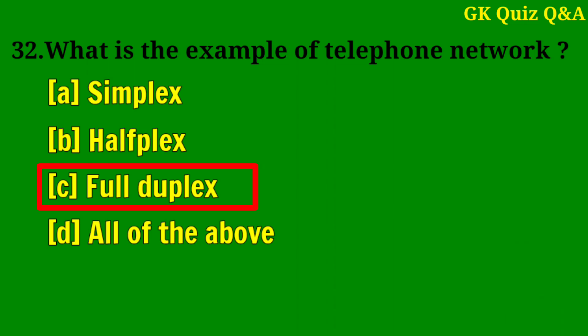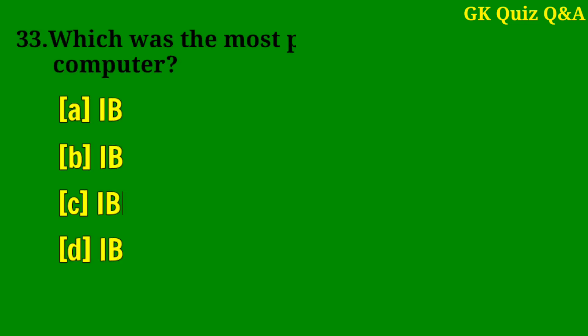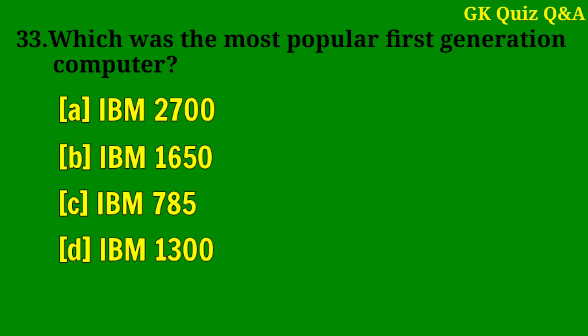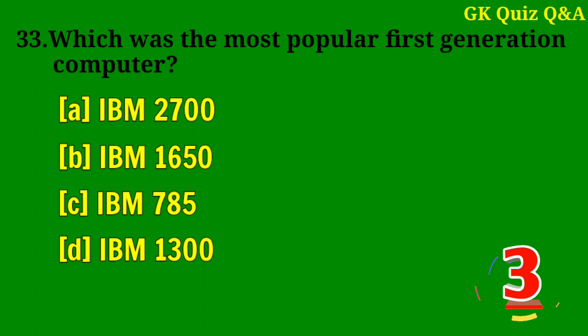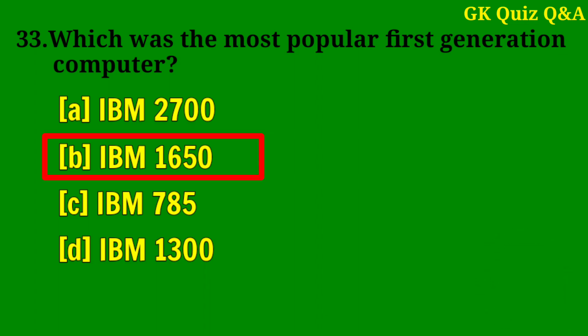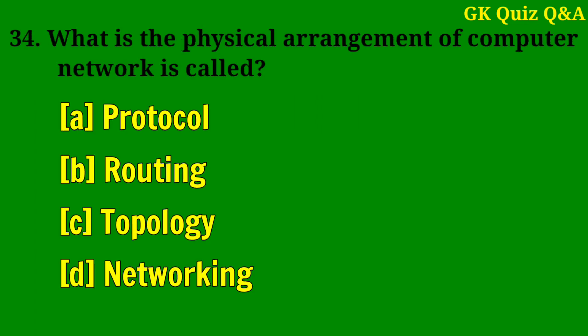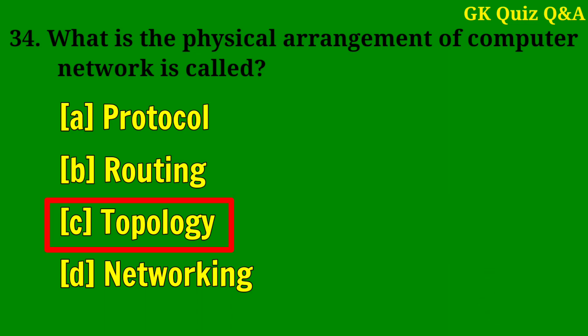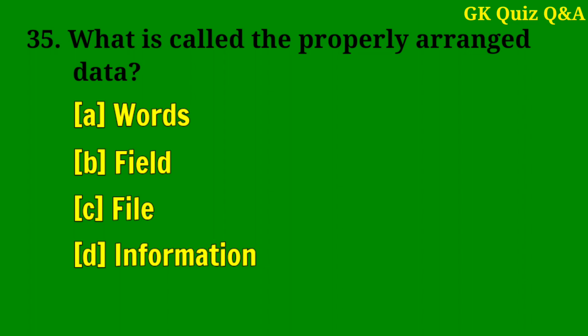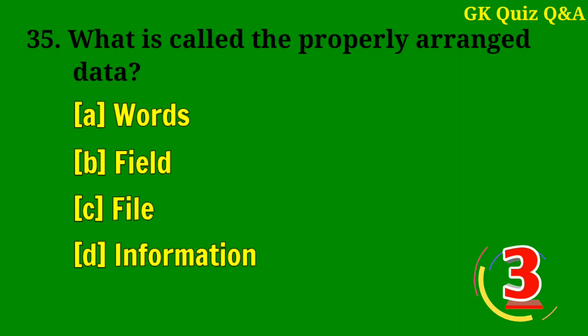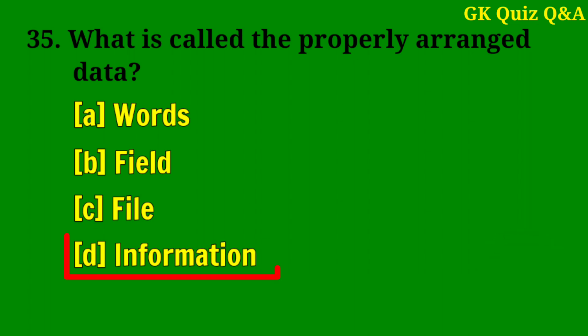What is the example of a telephone network? Answer C: Full duplex. Which was the most popular first generation computer? Answer B: IBM 650. What is the physical arrangement of a computer network called? Answer C: Topology.